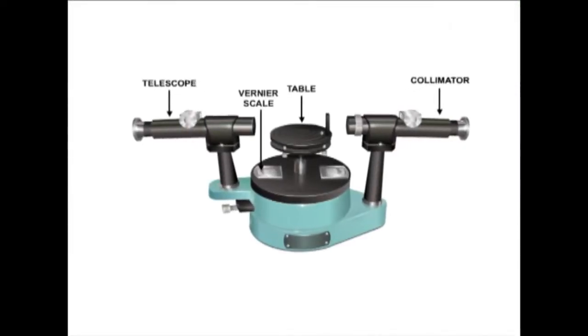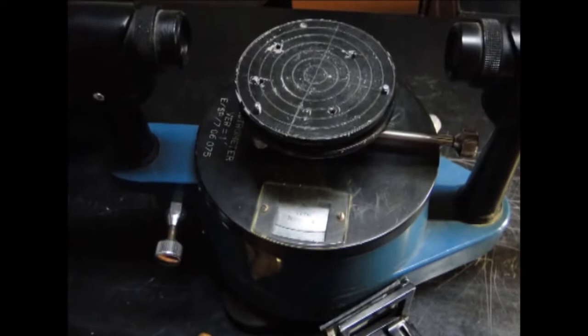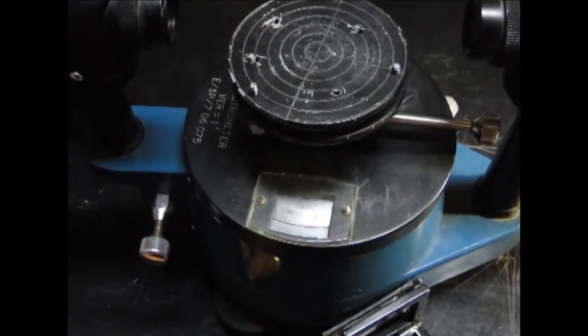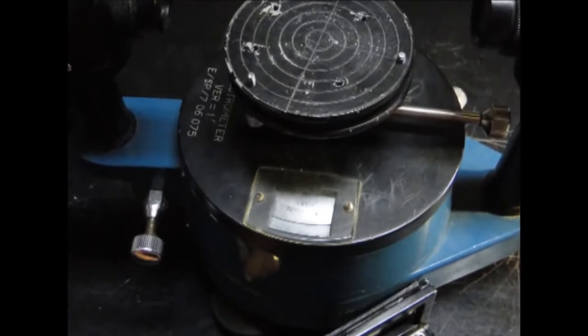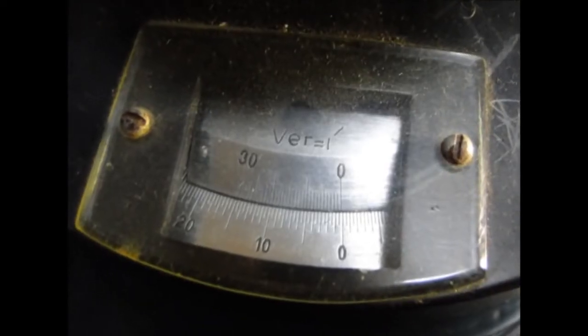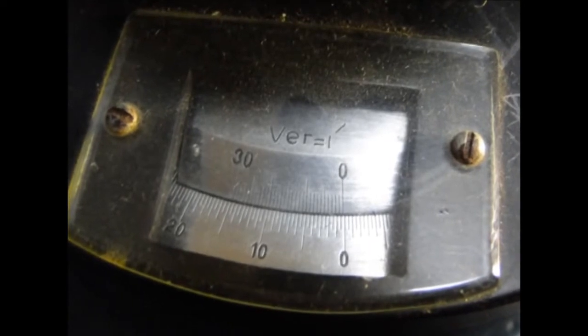Vernier Scale - A circular scale of 360 degrees can be anchored to the arm that supports the telescope. This allows you to determine the angular position of the telescope relative to the collimator from the reading of a vernier scale fixed to the base of the spectrometer.